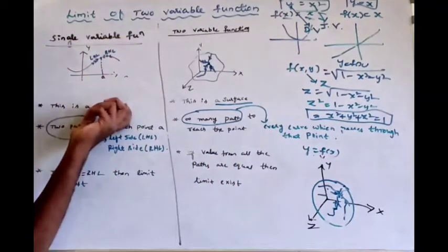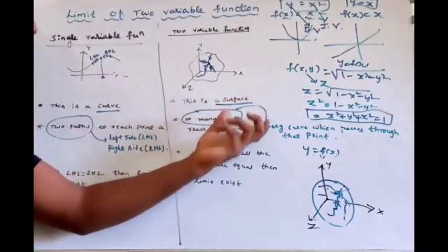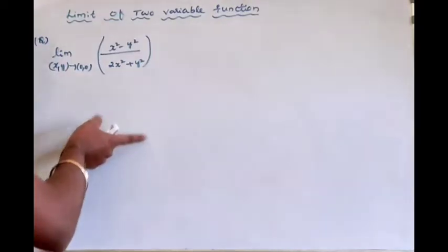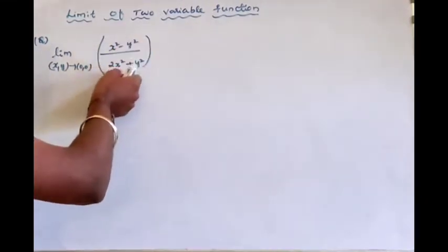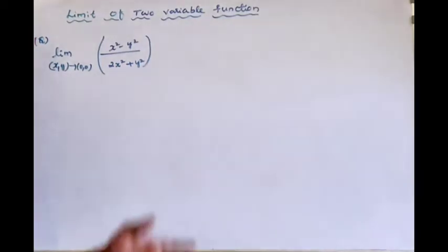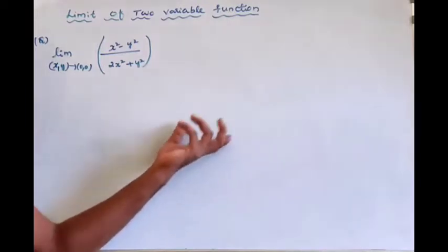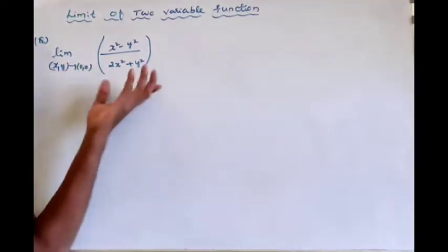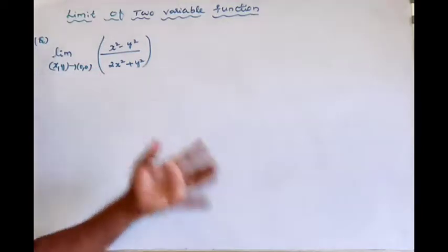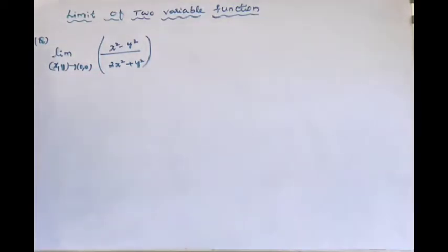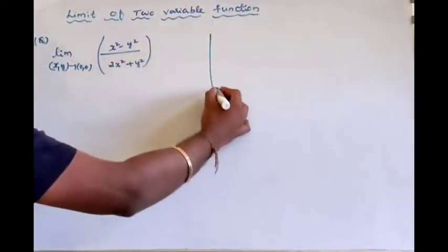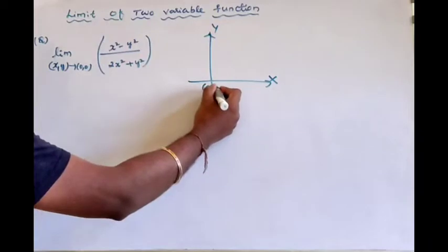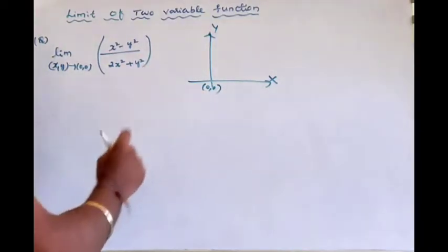We will find the difference between the two-variable cases through problems. The first problem is: find the limit as (x, y) tends to (0, 0) of (x squared minus y squared) divided by (2x squared plus y squared). We set up the y-axis and x-axis, and consider approaching the point (0, 0).